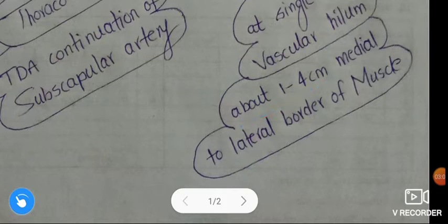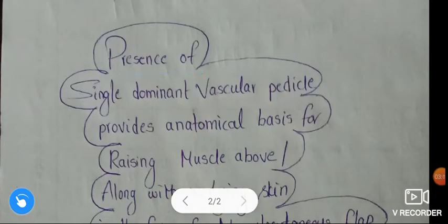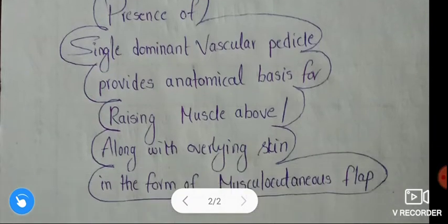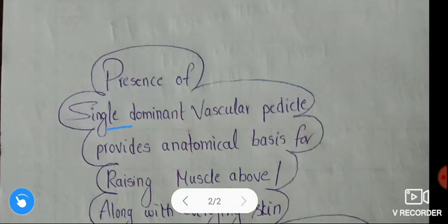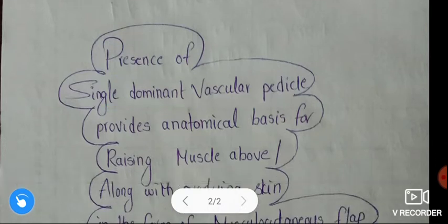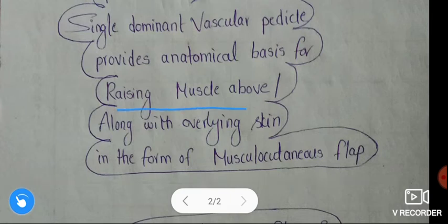The presence of a single dominant vascular pedicle provides the anatomical basis for raising the latissimus dorsi muscle along with the overlying skin in the form of a musculocutaneous flap.